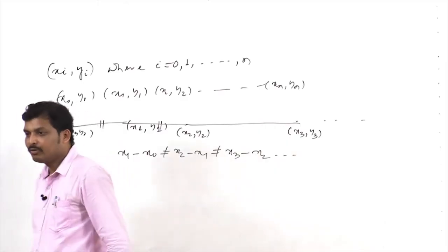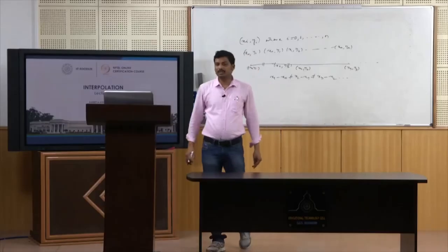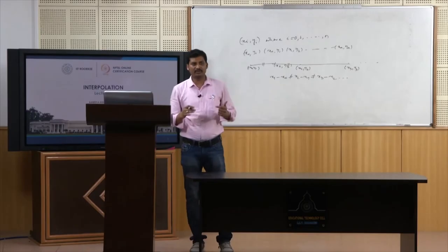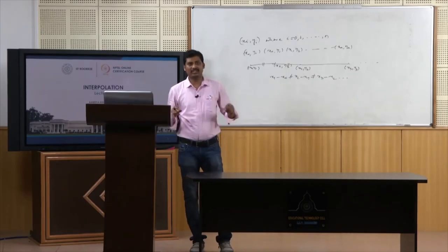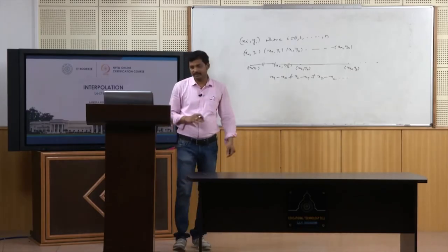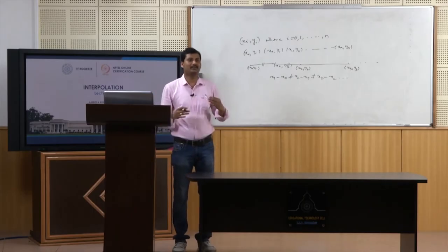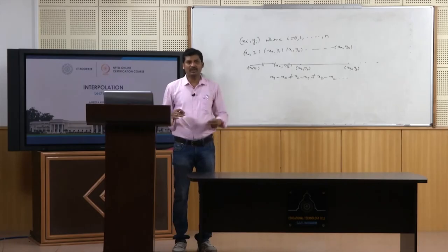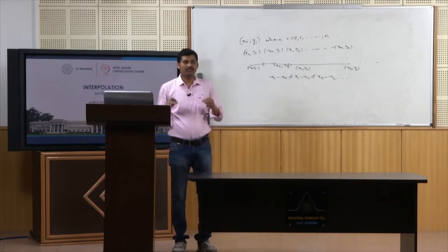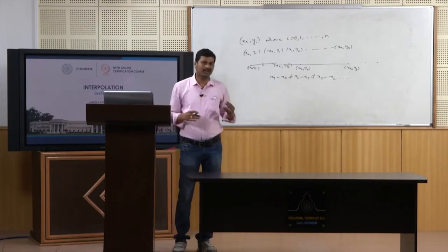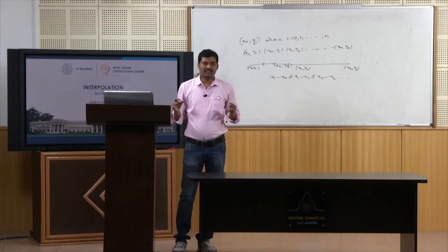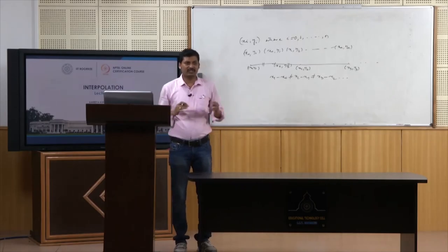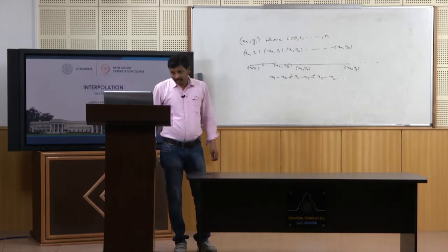In this case we cannot use Newton's forward formula, Newton's backward difference formula, or any of these forward difference approximations. For that we need a separate formula which can handle unequally spaced points. For unequally spaced points we consider three interpolation methods: first is Lagrange interpolation, second is Newton's divided difference formula, and third is Hermite's interpolation method.